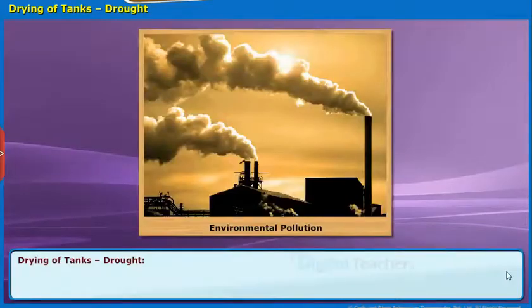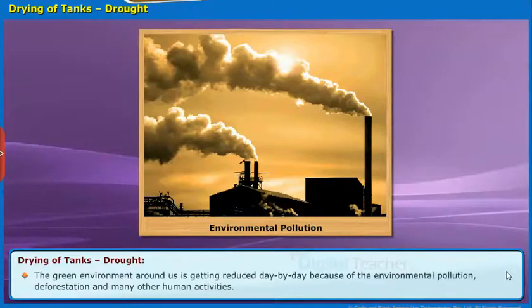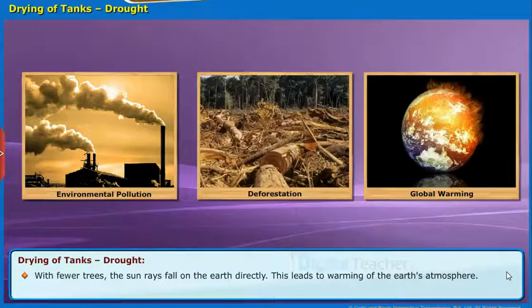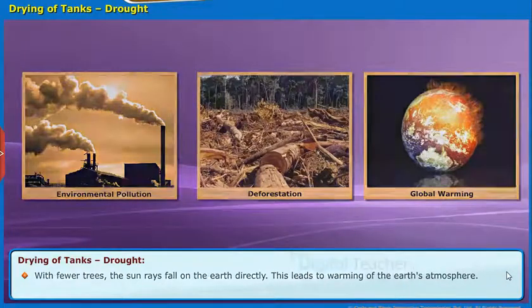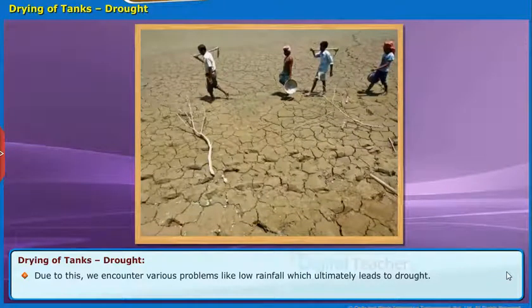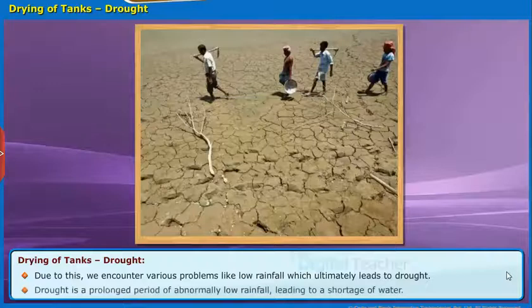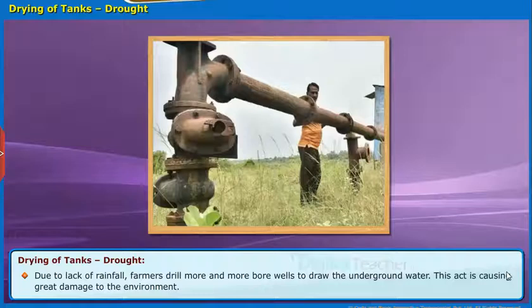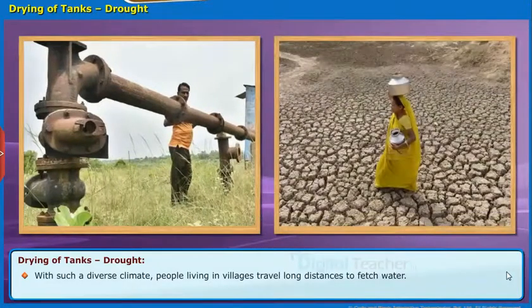Let us now know about the factors that cause the drying of tanks. The green environment around us is getting reduced day by day because of environmental pollution, deforestation and many other human activities. With fewer trees, sun rays fall on the earth directly, leading to warming of the earth's atmosphere. Due to this, we encounter various problems like low rainfall, which ultimately leads to drought — a prolonged period of abnormally low rainfall leading to shortage of water. Due to lack of rainfall, farmers drill more and more bore wells to draw underground water, causing great damage to the environment. With such diverse climate, people living in villages travel long distances to fetch water.